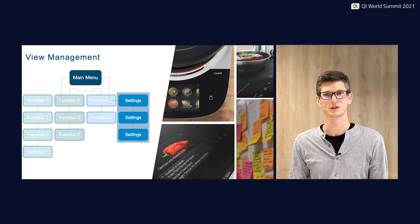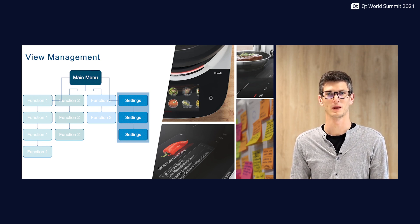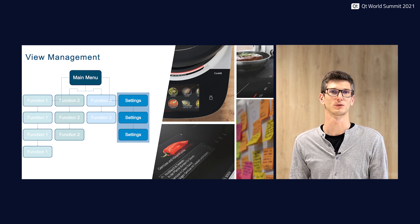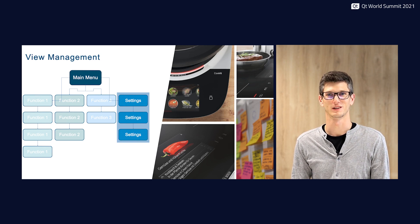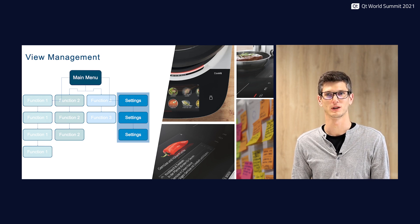When you leave a group — for example, to the main menu or to another feature — the entire group is deleted. This is also important for Home Connect, the appliance companion application that runs on your smartphone. With that smartphone application you can fully control the appliance, which means you can trigger almost any kind of view transition. So a solid view management is really important here.